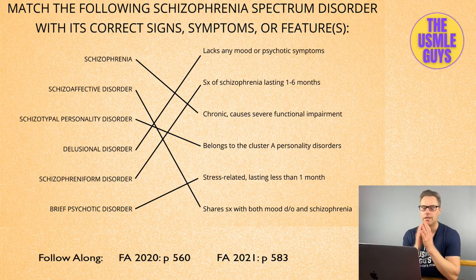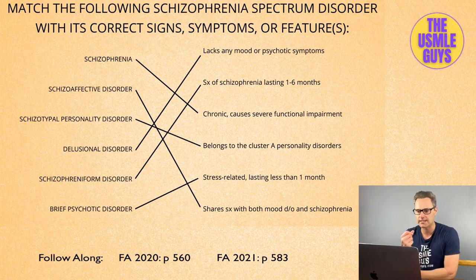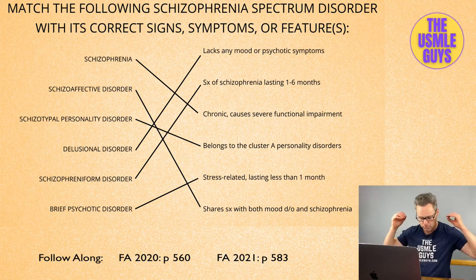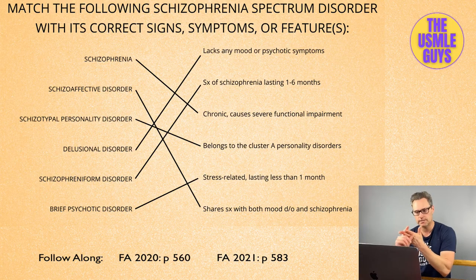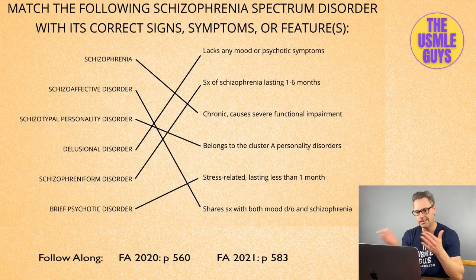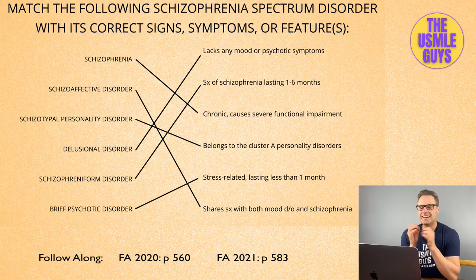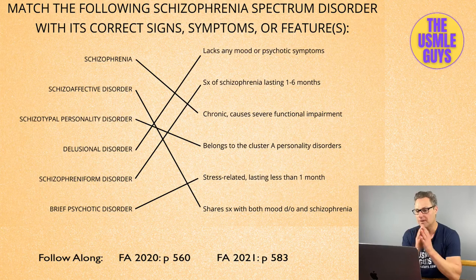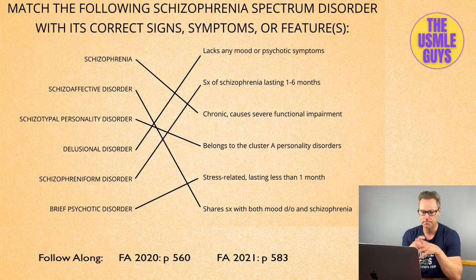Brief psychotic disorder demonstrates one or more positive symptoms of schizophrenia but is present for less than one month. The most common cause is stress-related. You can't diagnose schizophrenia if symptoms have only been present for 20 days. Schizophreniform disorder is similar to schizophrenia, but its diagnostic criteria include at least two or more symptoms persisting between one and six months. That time frame is critical — it looks like schizophrenia, but the duration isn't long enough yet.